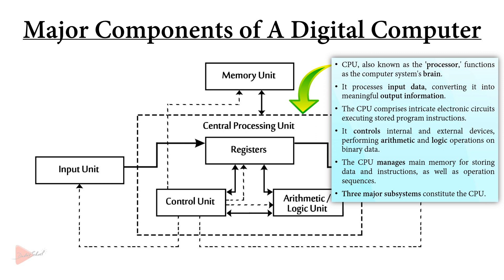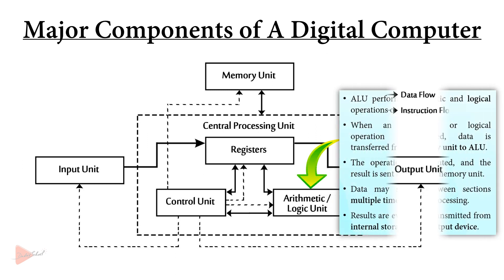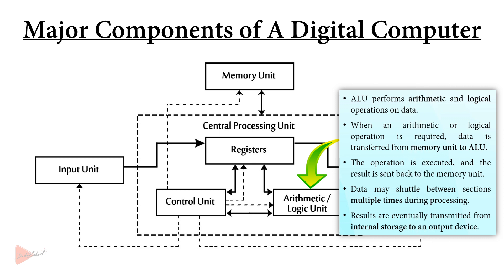Furthermore, it governs the utilization of main memory for storing data and instructions while also managing the sequence of operations. The CPU consists of three major subsystems. Starting with the ALU — the arithmetic logic unit executes arithmetic and logical operations on the provided data. Whenever an arithmetic or logical operation is to be performed, the necessary data is transferred from the memory unit to the ALU. The operation is then carried out and the result is sent back to the memory unit.